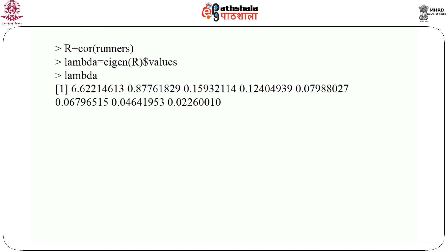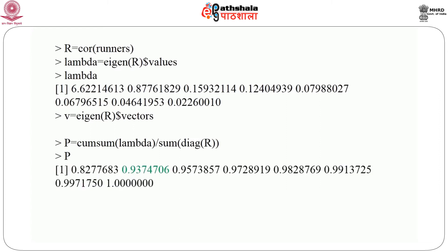Next, we find the eigenvalues corresponding to the matrix R and store them in the R object lambda. Here are the eigenvalues in decreasing order of magnitude. We also extract the eigenvectors corresponding to the different eigenvalues of the matrix R and find the cumulative proportion of the total variability explained by the different factors. Here is the cumulative proportion of the variability explained by the factors. Notice that the first 2 factors explain about 94 percent of the total variability of the data. So we consider that the number of factors P for our given data is 2.